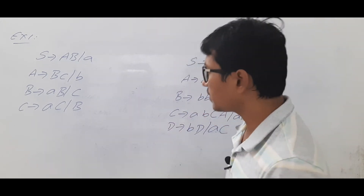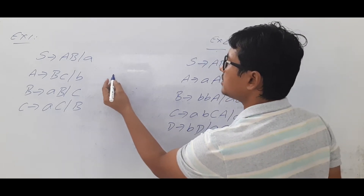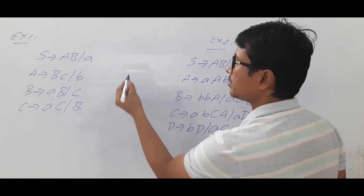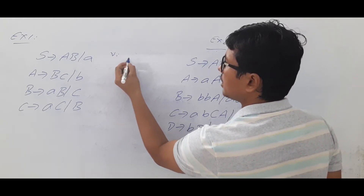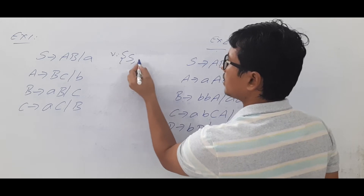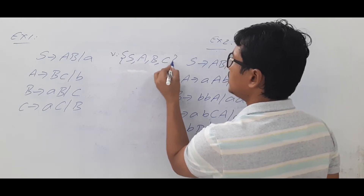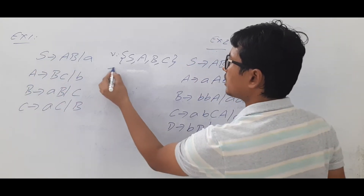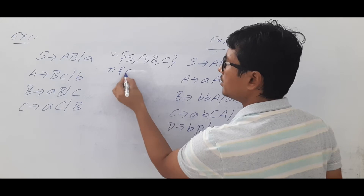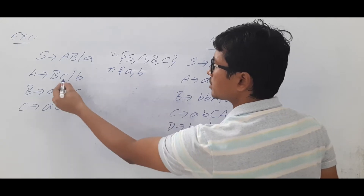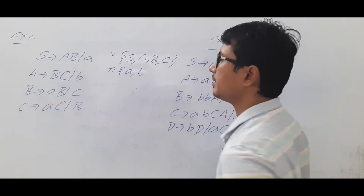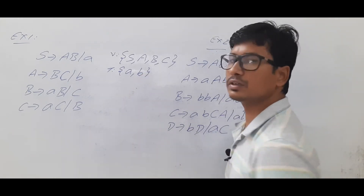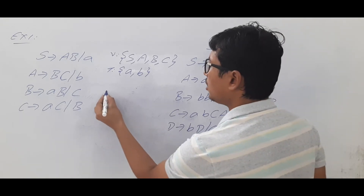Looking at example one: the variables are S, A, B, and C. The terminals are small 'a' and small 'b'. Note that there is also a capital C — don't get confused between capital C and small c. We will now discuss what the useful symbols are.